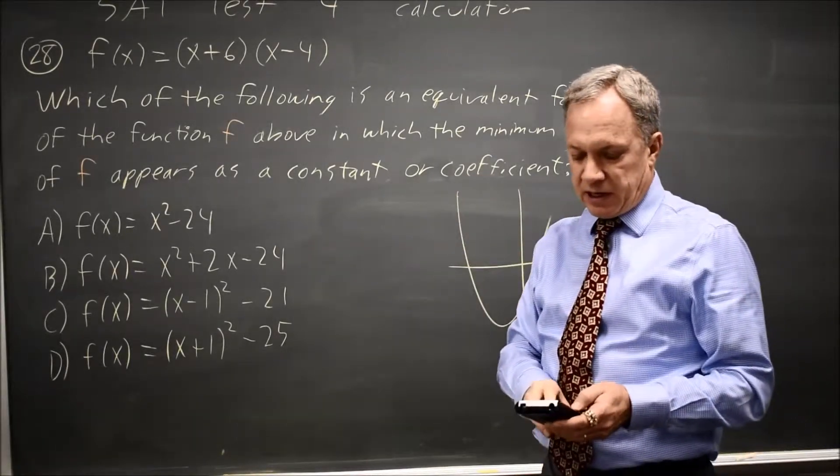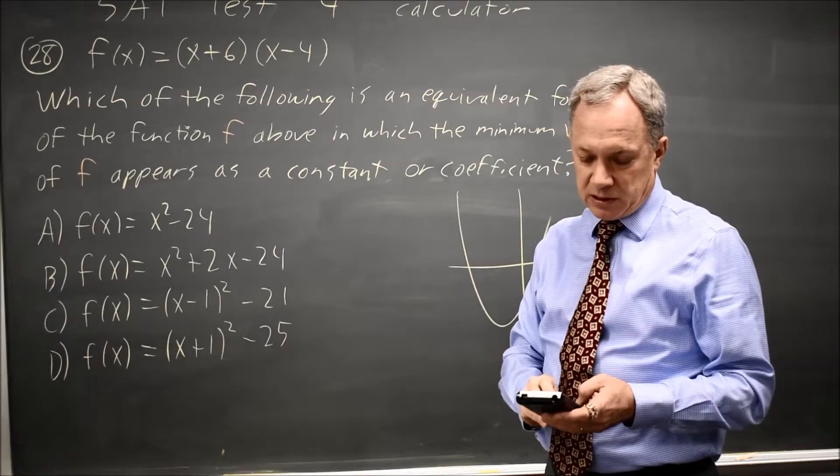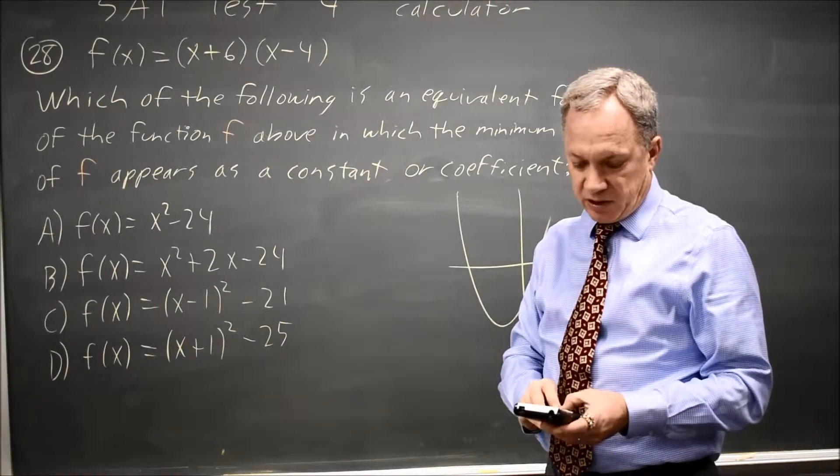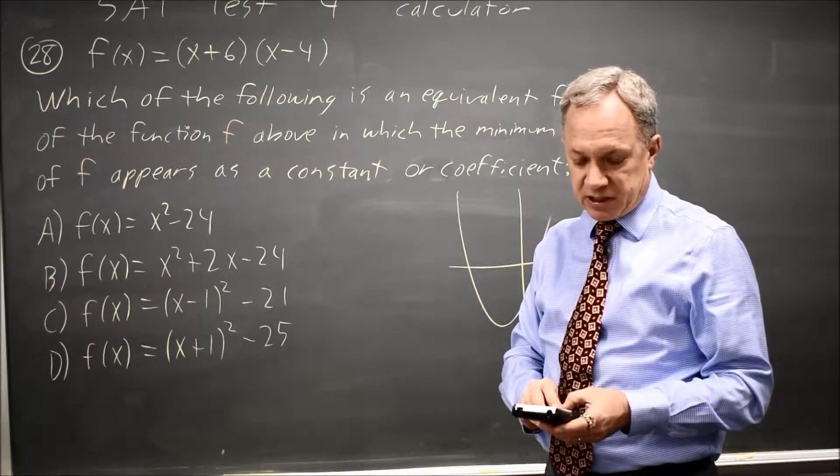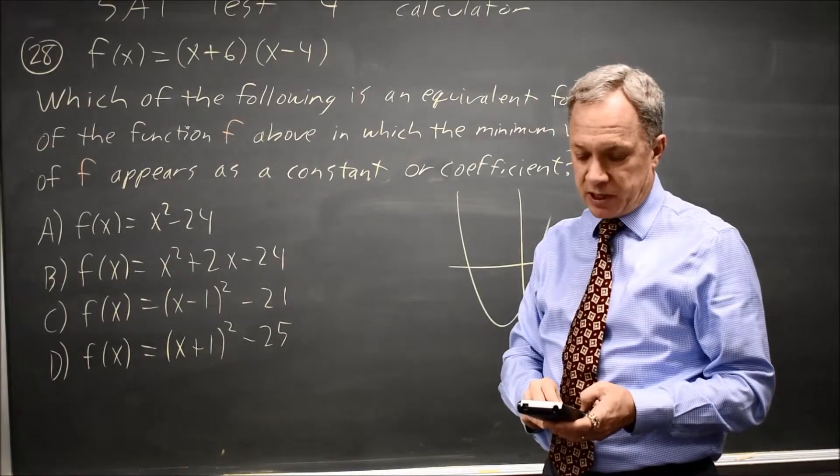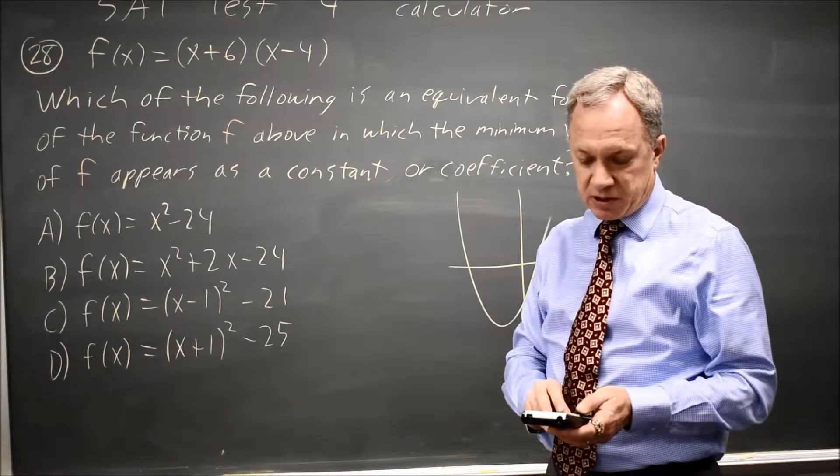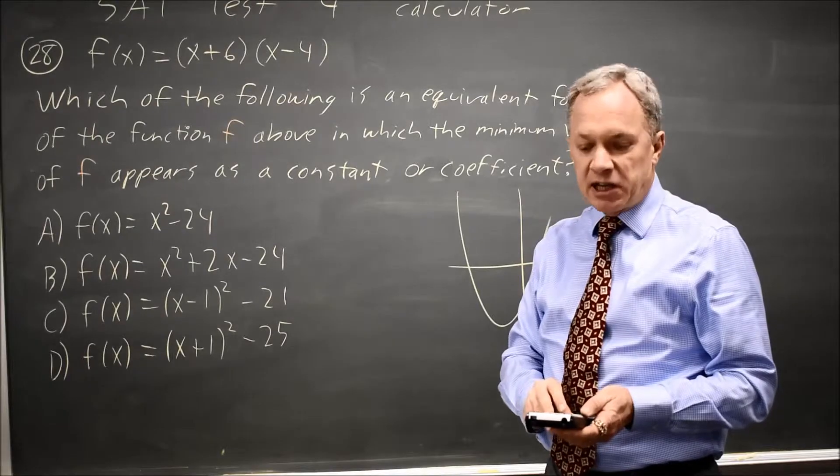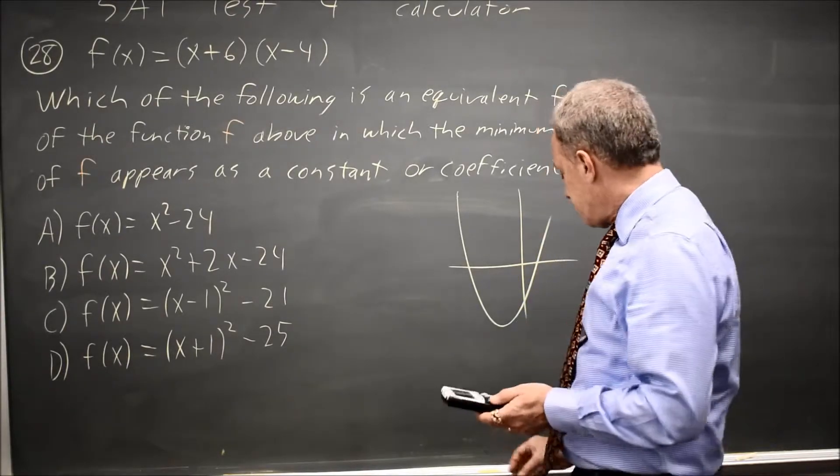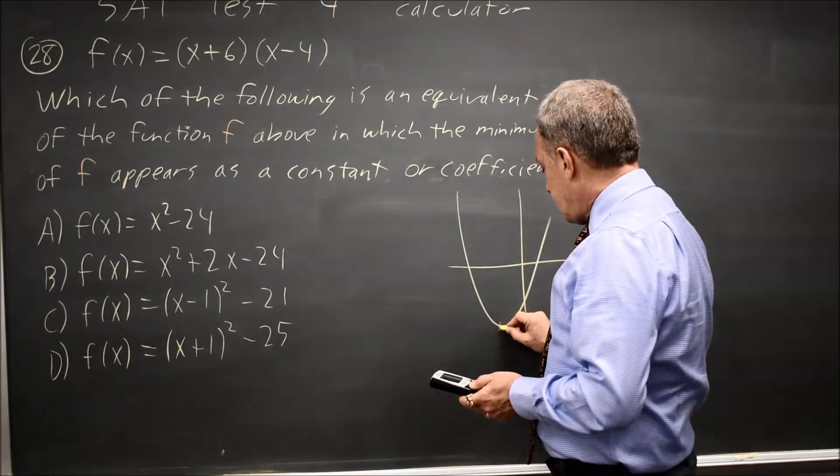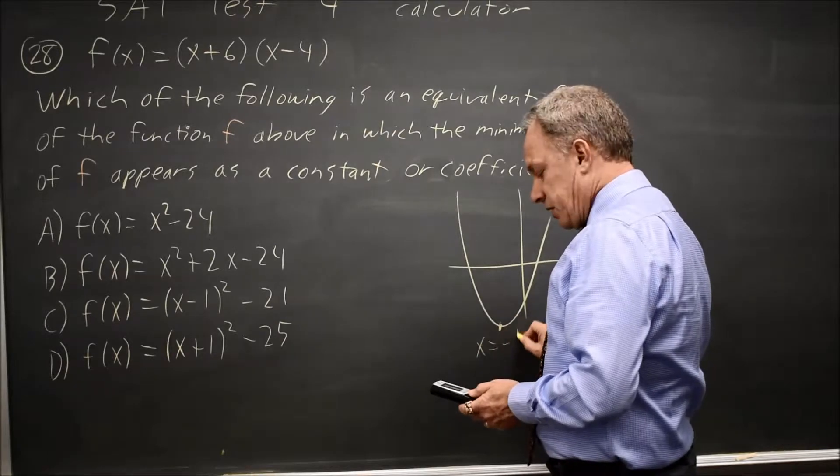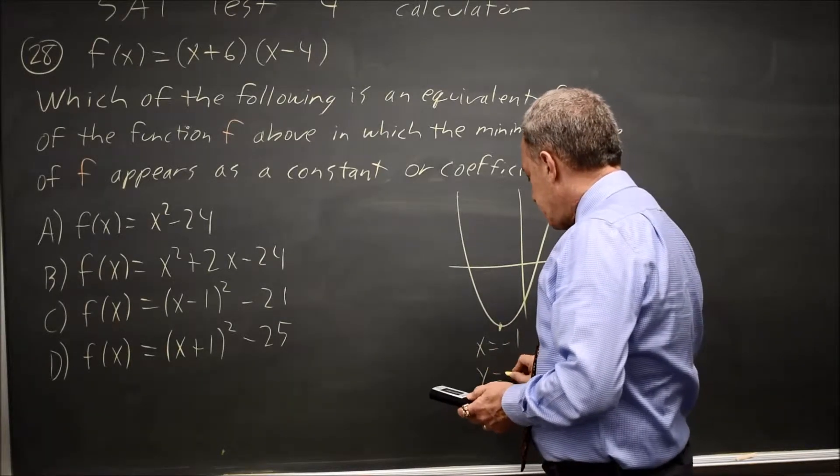If I calculate the minimum, and I move to the left of the minimum, I can just type in negative 6 because that's clear to the left, and ask for right bound, and let's try positive 6, which I know is to the right. I'm just going to hit enter for guess, and the calculator says the minimum is X equals negative 1, Y equals negative 25.